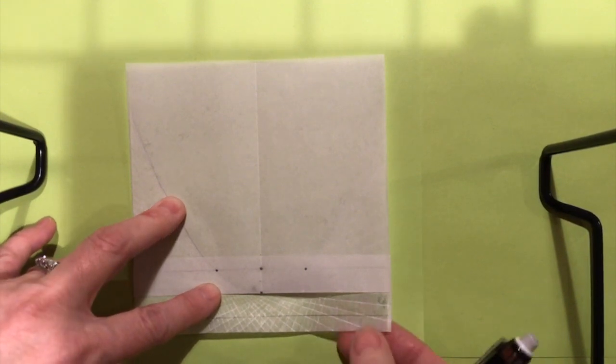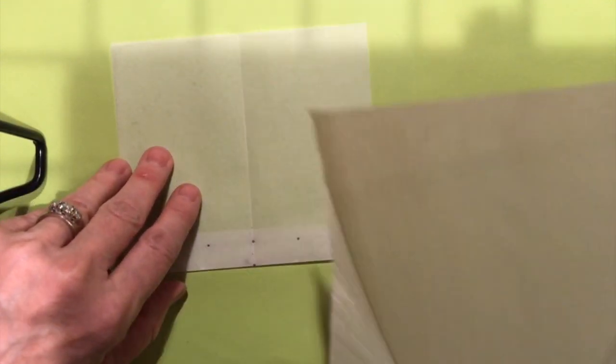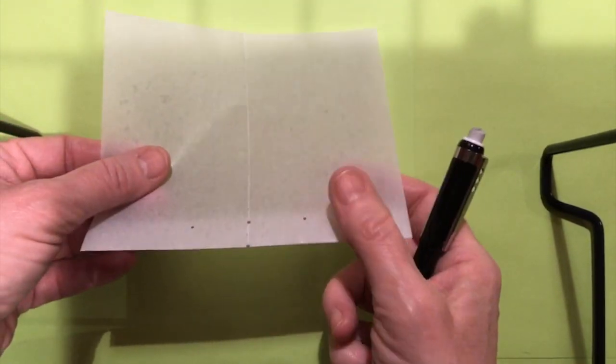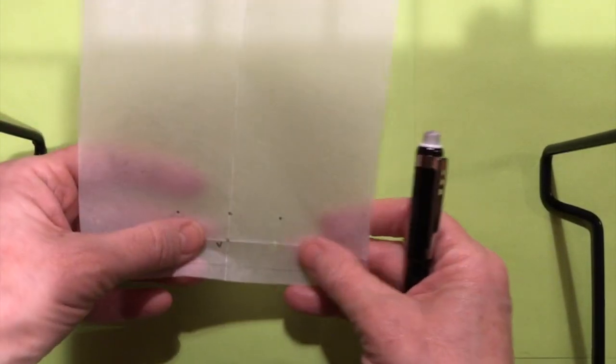With those two dots in place, I can safely take away the bottom layer and set it aside for now. And then I can also unfold this layer.